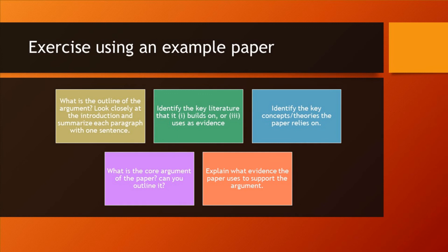Here are two examples of exercises you could try. The first: take an example paper — like one of the two I talked about — and look closely at the argument. Try to outline the argument by reducing each paragraph to one sentence, and see how the argument builds. Identify the key literature they build on and the literature used as evidence — specifically the literature they reference many times, not just once. What are the concepts and theories they use? Can you identify those? And what's the core argument — if you were to explain this paper to a friend over coffee, what would it be? Finally, what is the evidence?